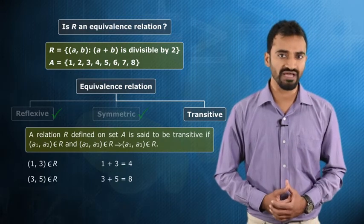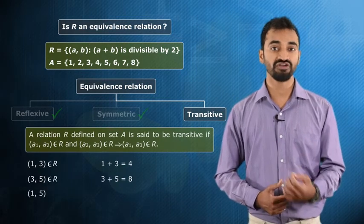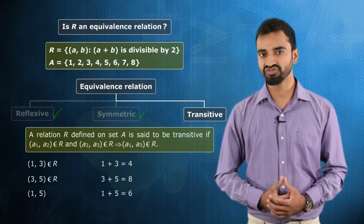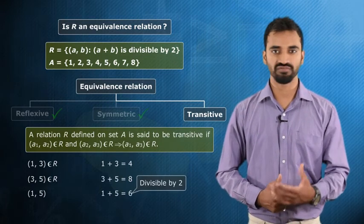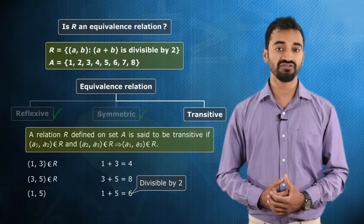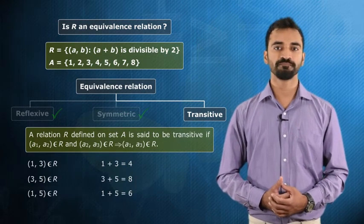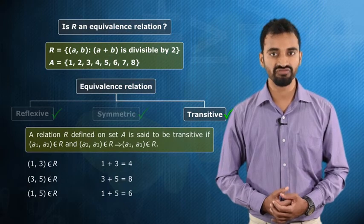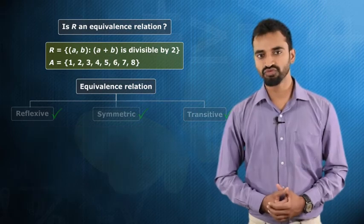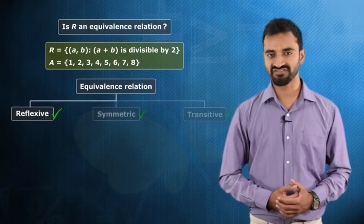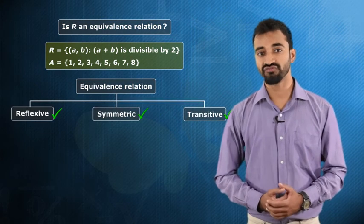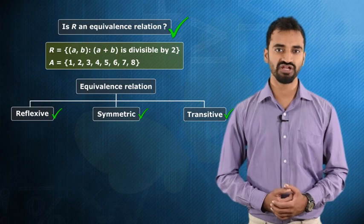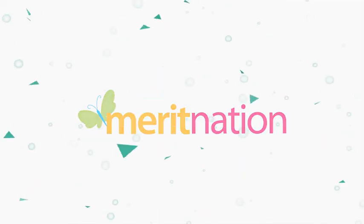Now we want to find out whether (1, 5) belongs to set R or not. 1 plus 5 is equal to 6, and 6 is divisible by 2. Therefore, (1, 5) also belongs to set R. Hence, the given relation R is transitive on set A. We have proved that the given relation R is reflexive, symmetric and transitive on set A. Therefore, the given relation R is an equivalence relation.